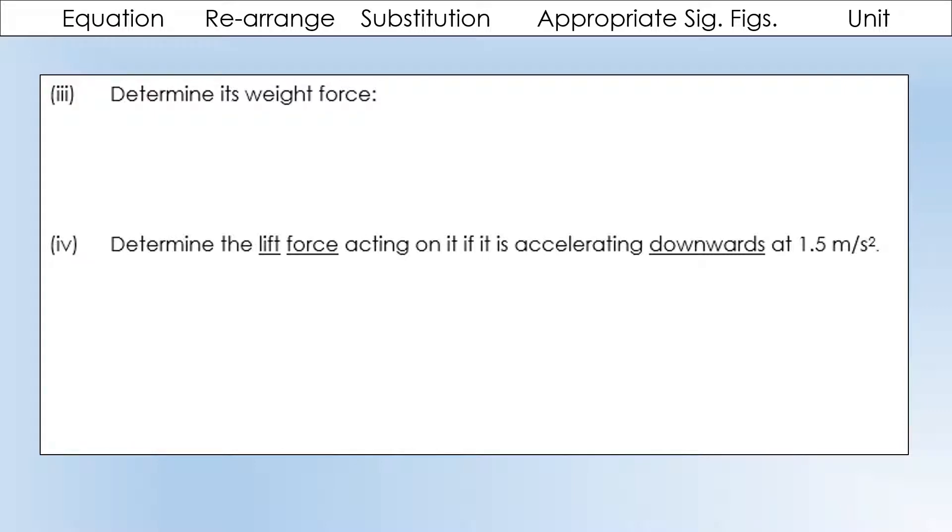Determine its weight force. So, weight force, we need the mass and the gravitational field strength. So, the mass we already calculated. Gravitational field strength on Earth is 10. So, that gives us our value of weight force. And you'll notice what I'm starting to introduce with the answers is actually writing it in what we call standard form, which makes it much easier to write and deal with, rather than writing out hundreds of zeros.